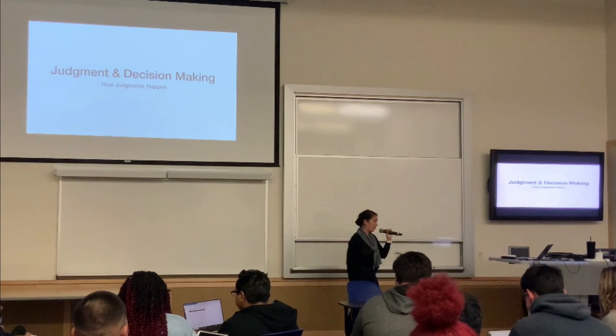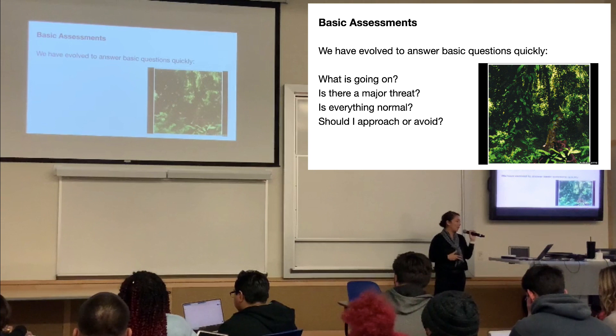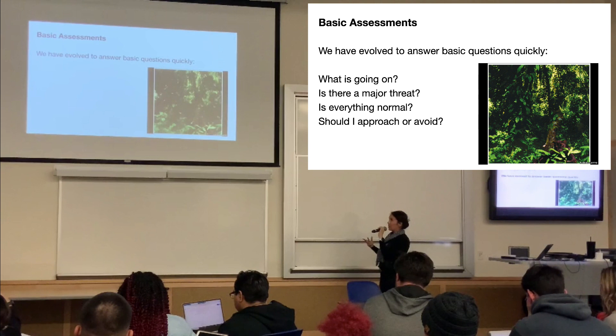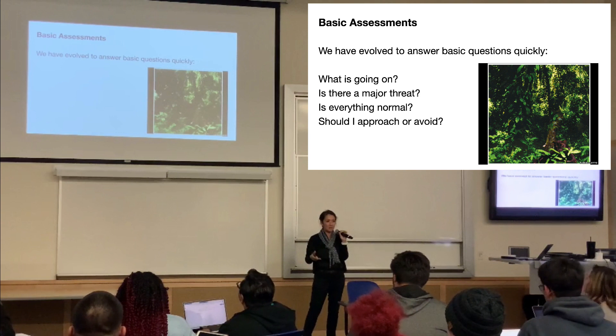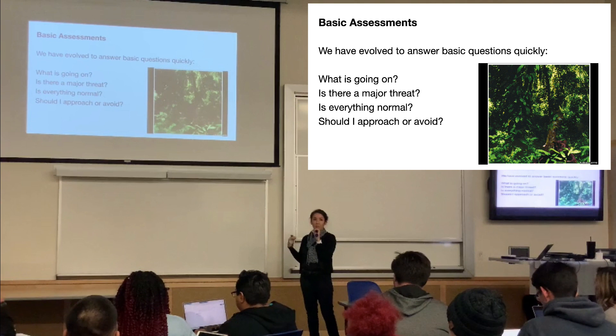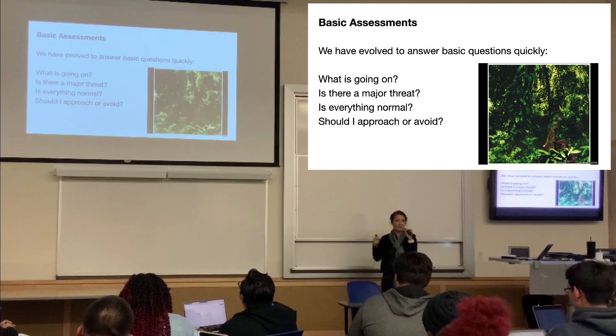Now we're going to talk about how judgments happen. The first step is a basic assessment. We have evolved to answer questions quickly, and that's how basic assessment happens. When you see a picture, the first basic assessment is: is there a threat? These are automatic responses — the fight-or-flight questions: what is going on now? Are there any major threats? Is everything normal? Should I approach or avoid?